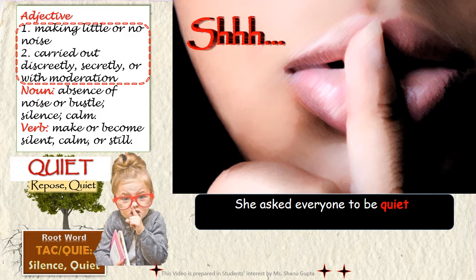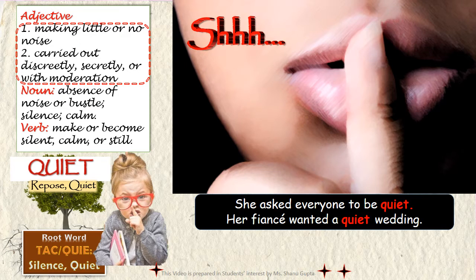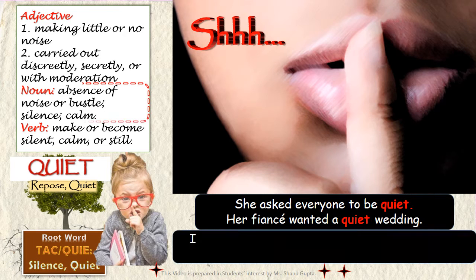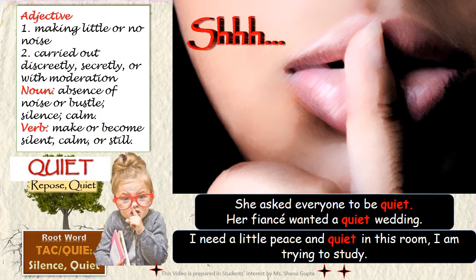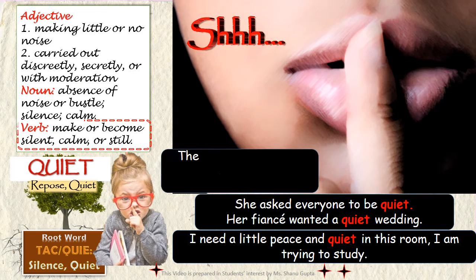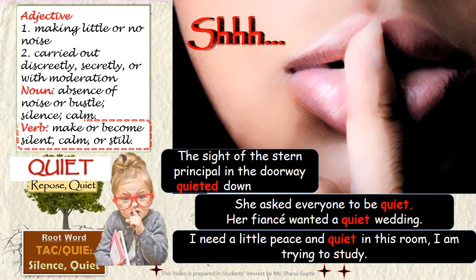For example: her fiancé wanted a quiet wedding. As a noun, quiet means silence or calm — for example, I need a little peace and quiet in this room because I am trying to study. And as a verb: the sight of the stern principal in the doorway quieted down the kids.